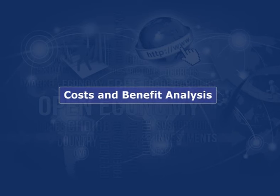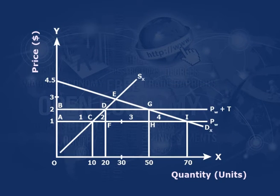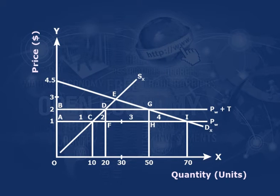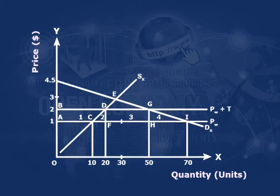Let us understand the cost and benefit analysis. As per figure 1, the reduction of consumer surplus is areas A, B, G, I — that is 1 plus 2 plus 3 plus 4, which is $60. Areas D, G, H, F — $30 — is collected by the government as import duty. An increase in producer surplus is areas A, B, D, C — that is $15. It means that $15 is redistributed from consumers to producers in the form of increased producer surplus. The remaining $15 — that is areas 2 plus 4 — depicts the protection cost or dead weight loss to the economy due to an import tariff.